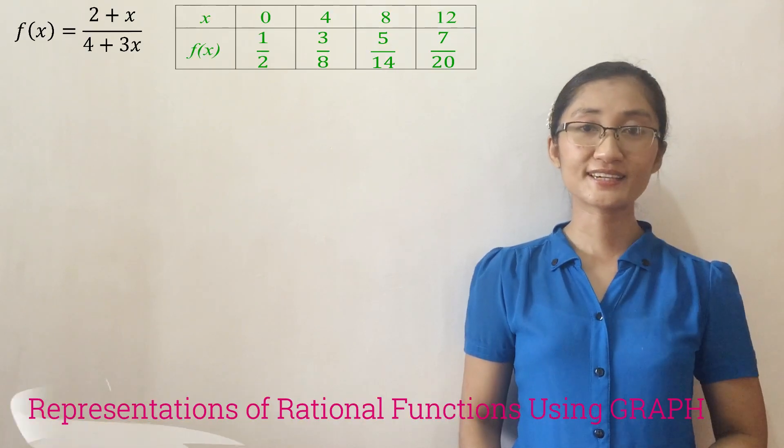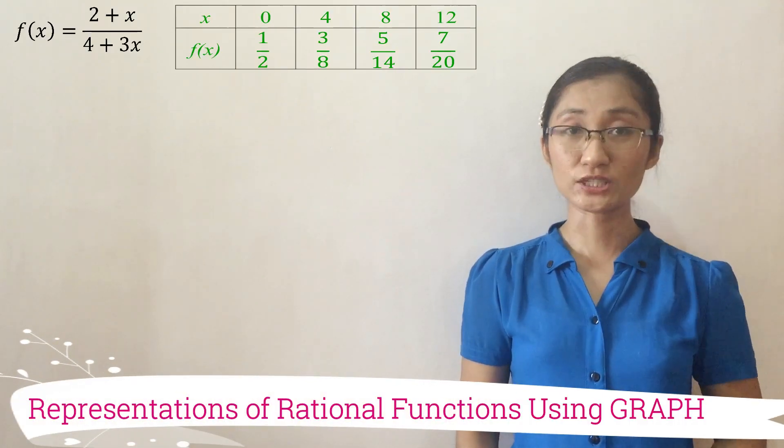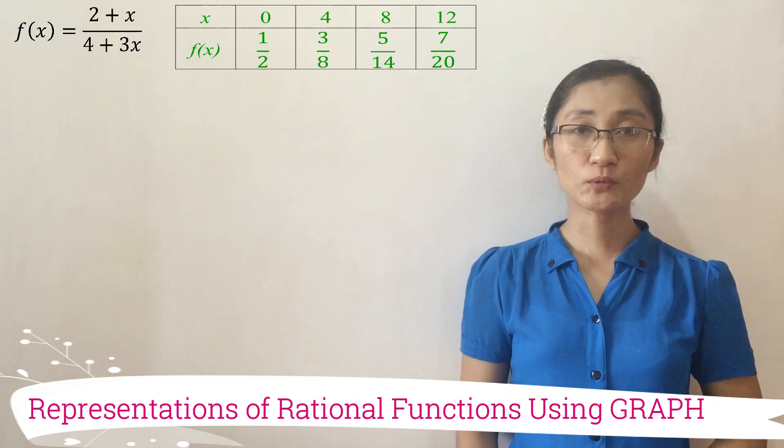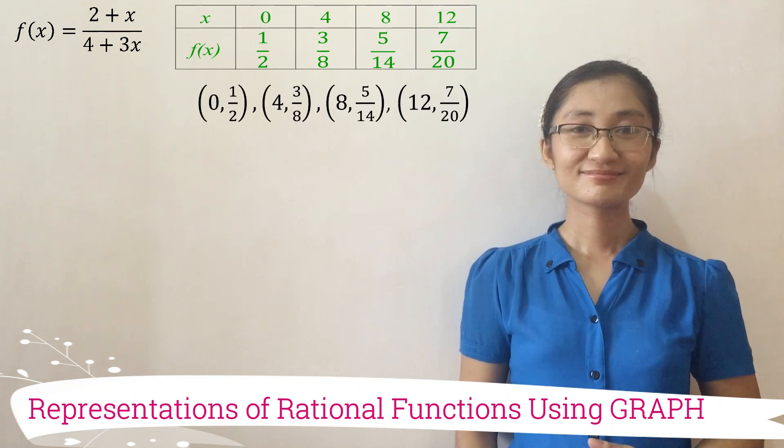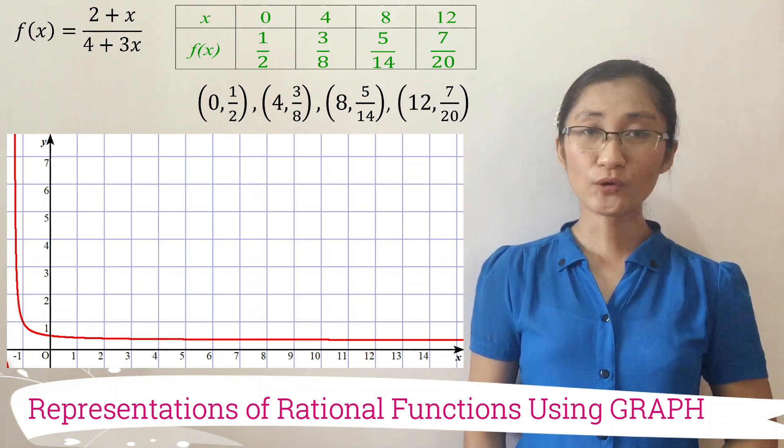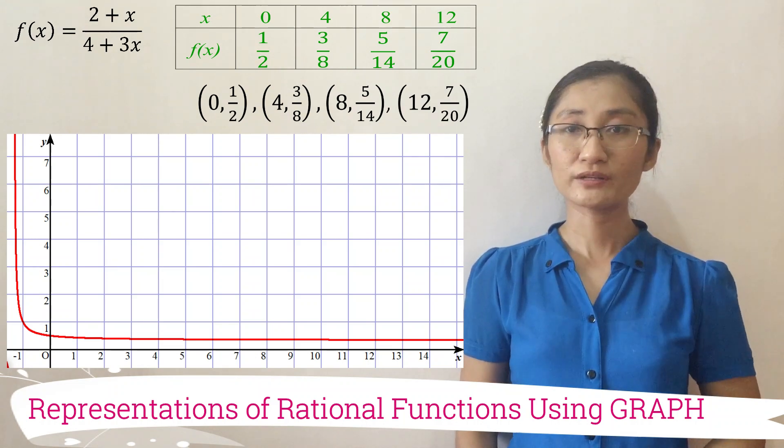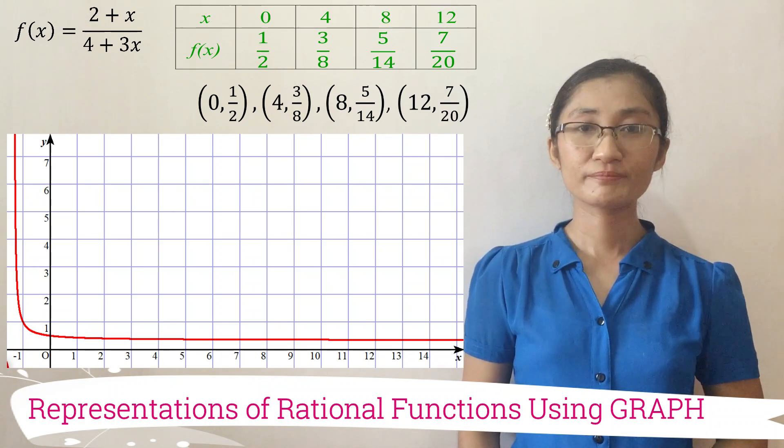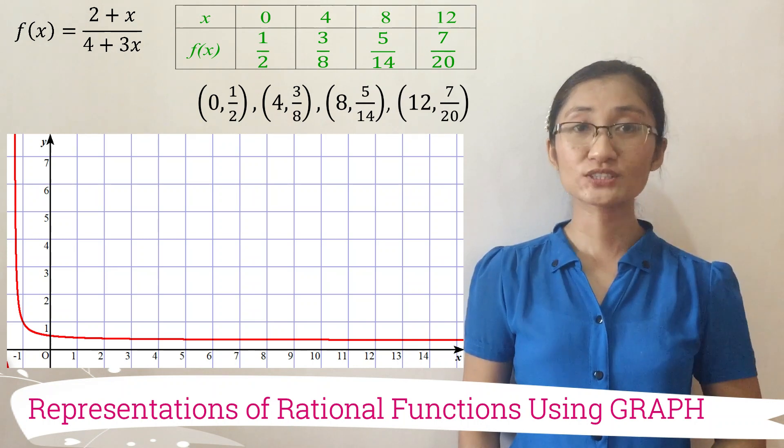To visualize it, let us plot the points they form on the Cartesian plane. So what are those points we need to plot? After plotting the ordered pairs in the table, the graph is a smooth curve, part of a graph of a rational function.